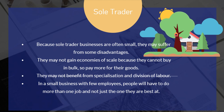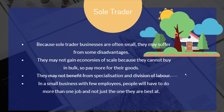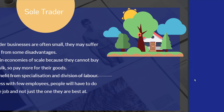Because sole trader businesses are often small, they may suffer from some disadvantages. They might not gain economies of scale because they cannot buy in bulk, so they pay more for their goods. For example, buying a thousand t-shirts might cost a pound each, whereas buying 50 might cost five pounds each. Sole traders may also not benefit from specialization and division of labor — in a small business, people have to do more than one job.